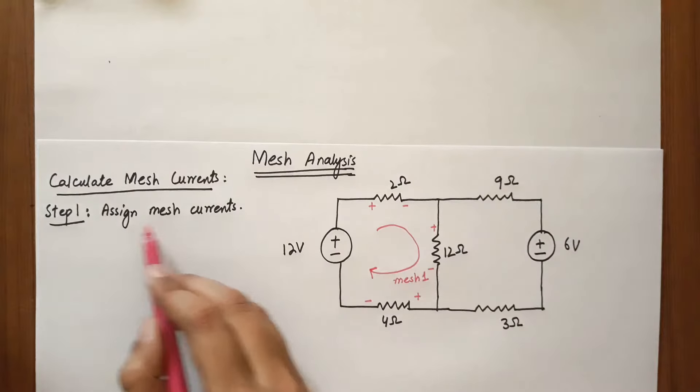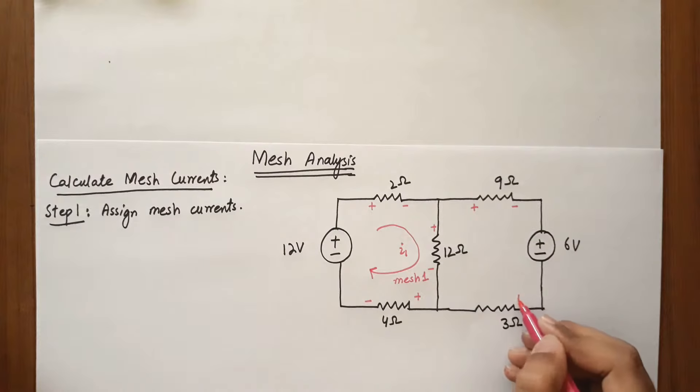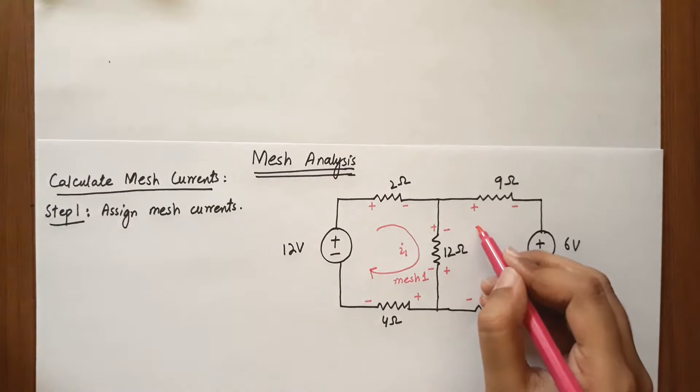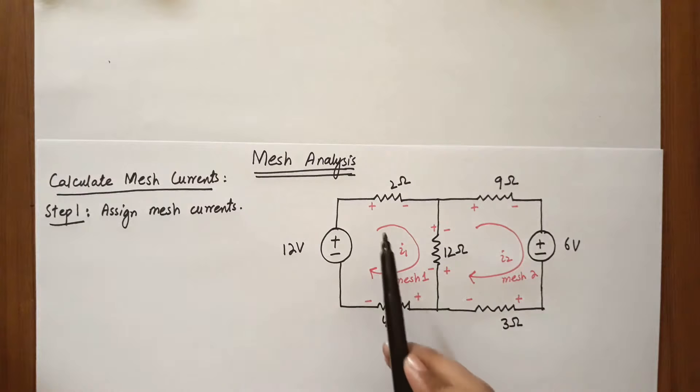We have to assign mesh currents. Let it be I1. There is another mesh, mesh 2, and let it be I2. The current flowing in mesh 2 is I2. Now we will find mesh currents I1 and I2.